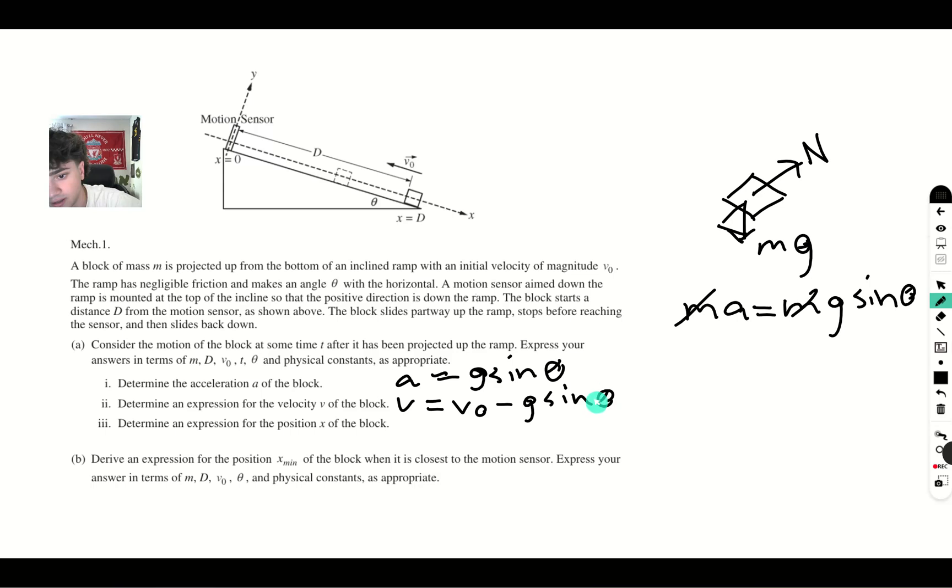And the reason there's a minus sign here is because the velocity is going this way, and the gravity is pulling it the other way.